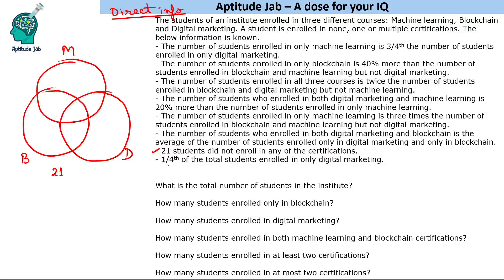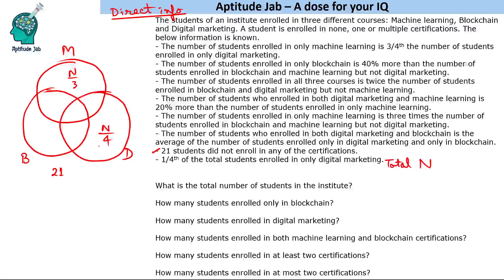Let's understand how to take the correct variables. Most students take total students as n and say one fourth of total students enrolled in only Digital Marketing is n/4. But this complicates the equations — if you have n/4 and n/3, it will be difficult and time-consuming to add things up.